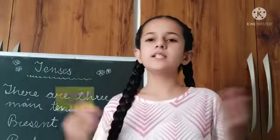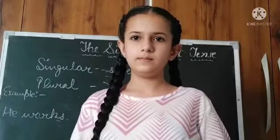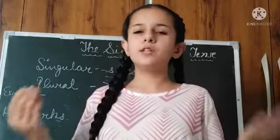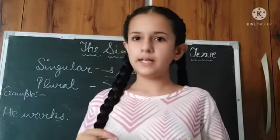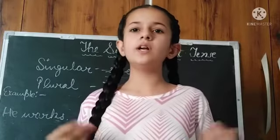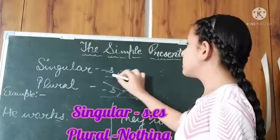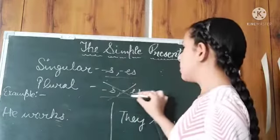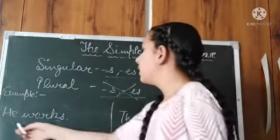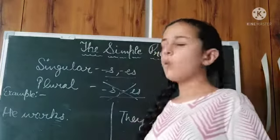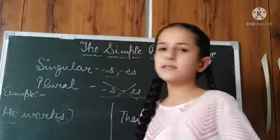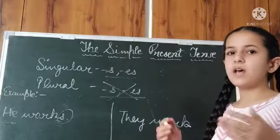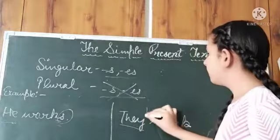Today we will learn about the simple present tense. Let's start. The simple present has the base form of the verb but adds S or ES for the third person singular — he, she, it, and other singular nouns. With singular we use S or ES, but with plural we use nothing. For example: 'He works' — we add S because he is singular. 'They work' — we don't add S or ES because they is plural.